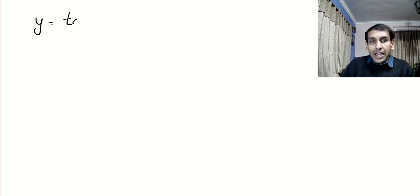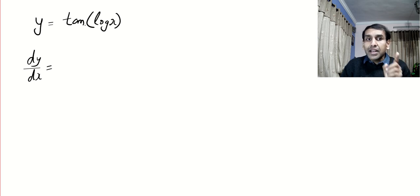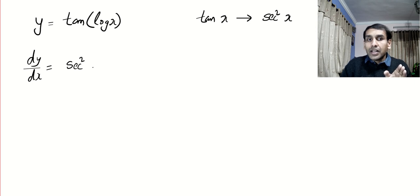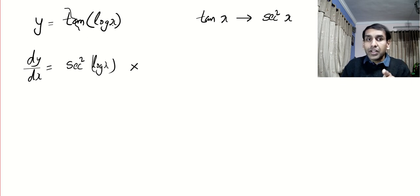Suppose you have tan(log x) — clearly a chain function. For dy/dx, ask yourself: can you see tan x or tan something? You see tan something. The derivative of tan x is sec squared x, so the derivative of tan something is sec squared of the same thing. Multiply by — chain rule says so. Now forget the first function. Is it log x or log something? Log x. The derivative is 1/x. That's it.